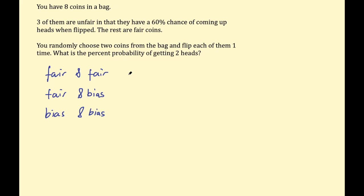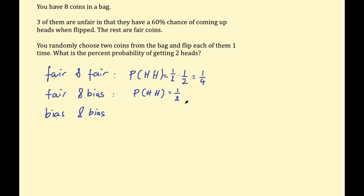Let's think about the probability of getting two heads with each of these possibilities. For two fair coins, each has a 50% chance of heads, so the probability of two heads is one-half times one-half, which is one quarter. For a fair and a biased coin, it's one-half times three-fifths — that's three out of ten. For two biased coins, it's three-fifths times three-fifths, which is nine out of twenty-five.